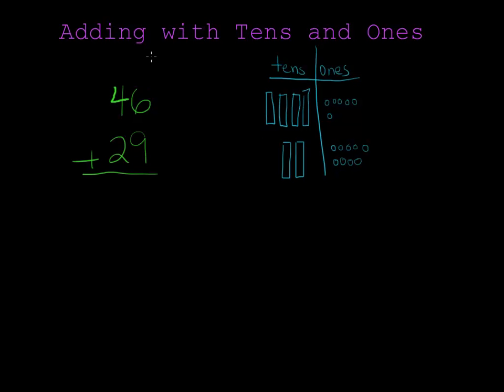Now when we add, we always start by adding the ones column. 6 plus 9, we'll do over here and we see that's a lot of ones. So the first thing I'm going to do is see if I can make a group of 10. There's enough to make a group of 10 with 5 left over.